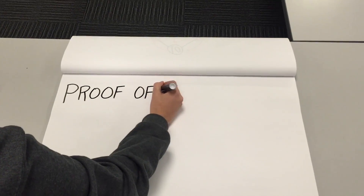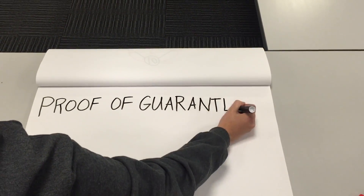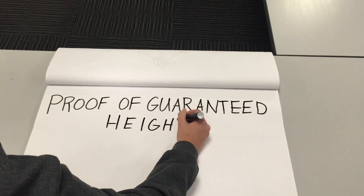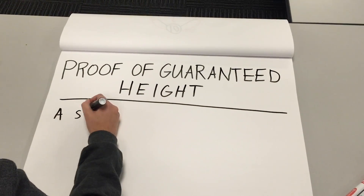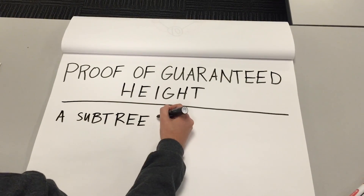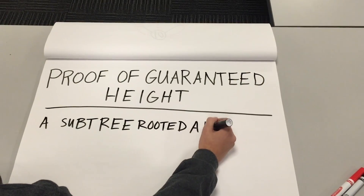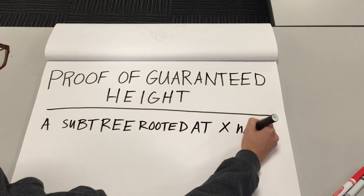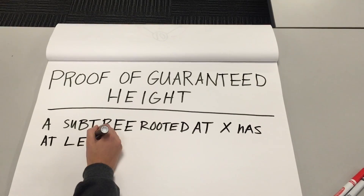We will now show the proof of guaranteed height for the worst-case time complexity of red-black trees. We start by defining a subtree rooted at node x that has at least 2 raised to the black height of x minus 1 nodes.